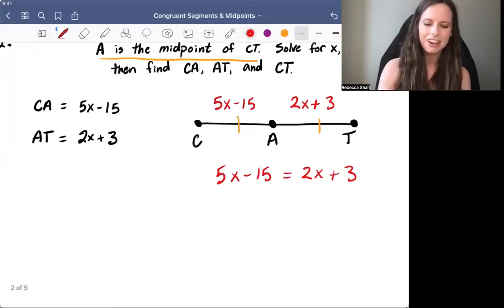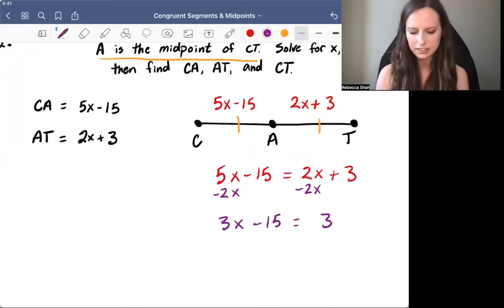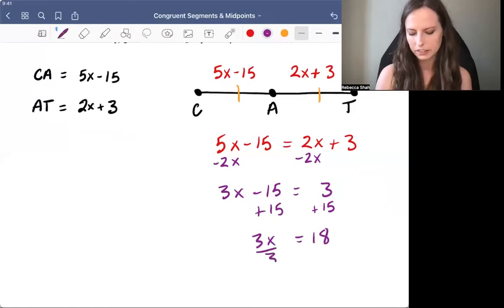Once you've got it this far, then you just have to solve for X. We've got X's on both sides. So I'm going to subtract 2X from both sides to combine my X's. That'll give me 3X minus 15 equals 3. I'll add 15 to both sides, giving me 3X equals 18. And then last, we'll divide both sides by 3, giving us X equals 6.